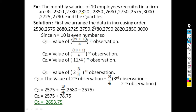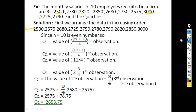Arranging in increasing order, the smallest observation is 2500 and the largest is 3000. The number of observations n = 10, which is even. So we use the even-n formulas.